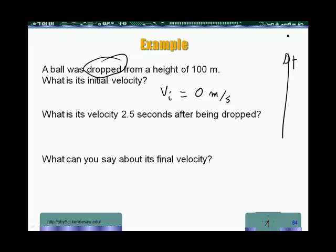The next question, what is its velocity 2.5 seconds after being dropped? Now what I need to do is go to one of my kinematic equations, the one for velocity. Velocity is given by Vi plus At. That's my equation. So here my Vi is zero meter per second.